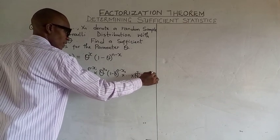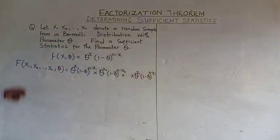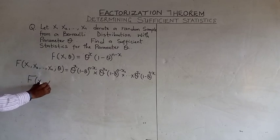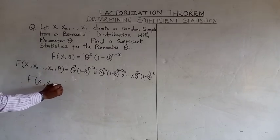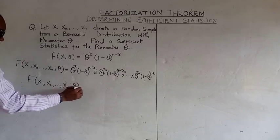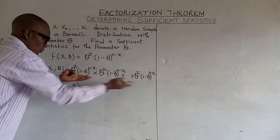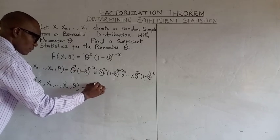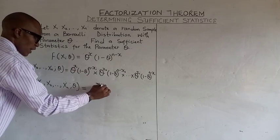So bringing this together we have theta^x1 x2 to xn. We put down the parameter. If we bring this together we have theta^(summation of xi's).